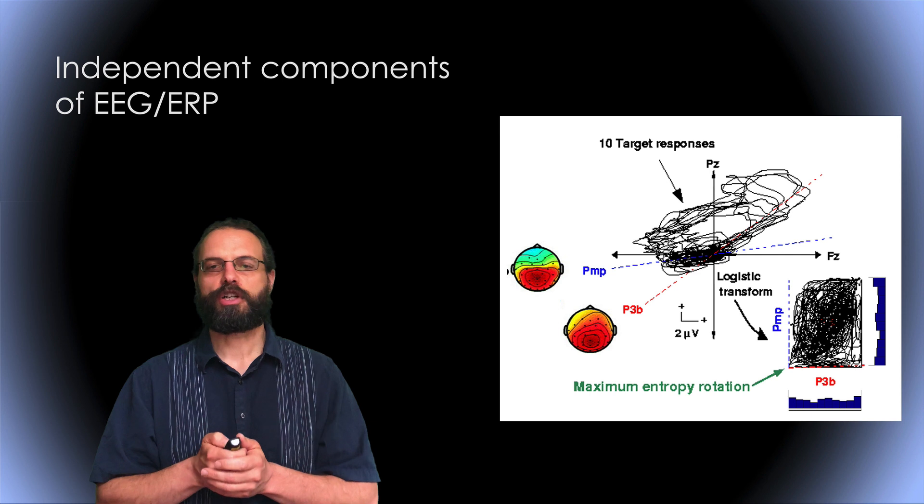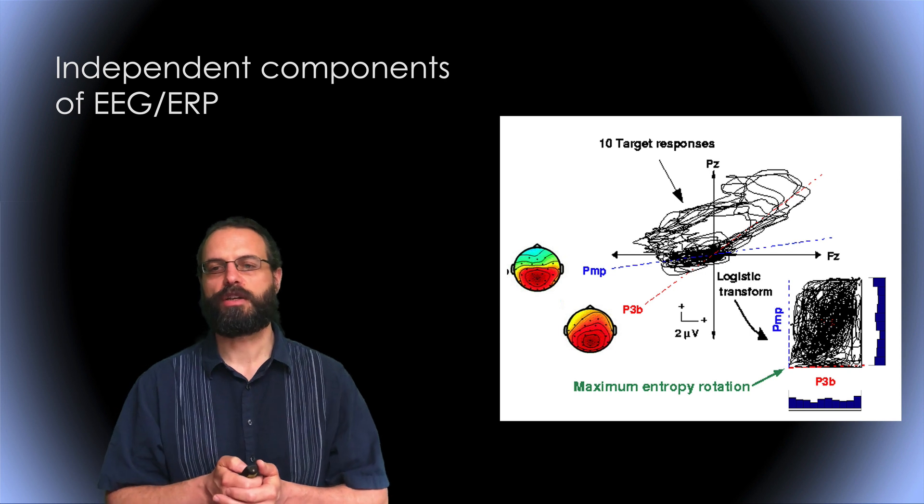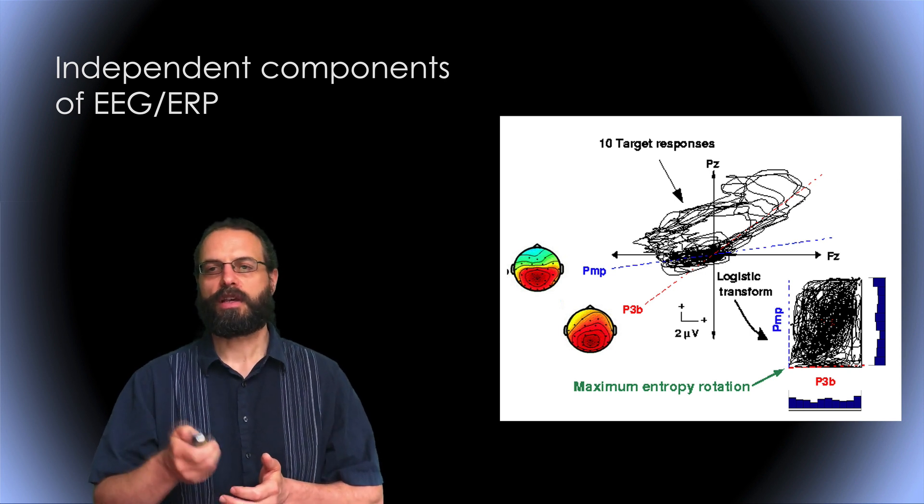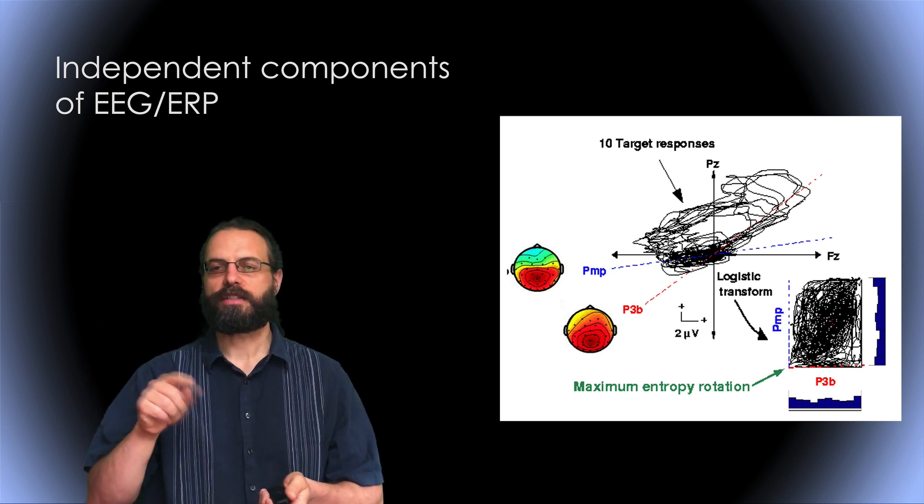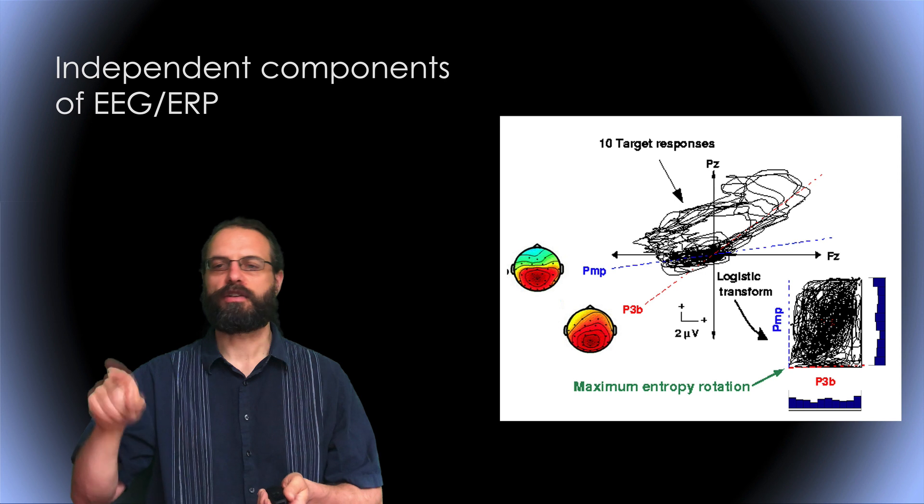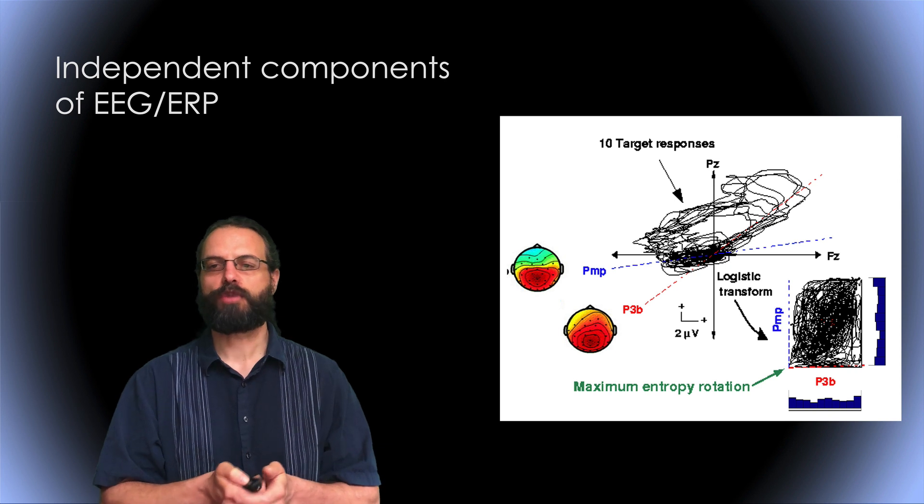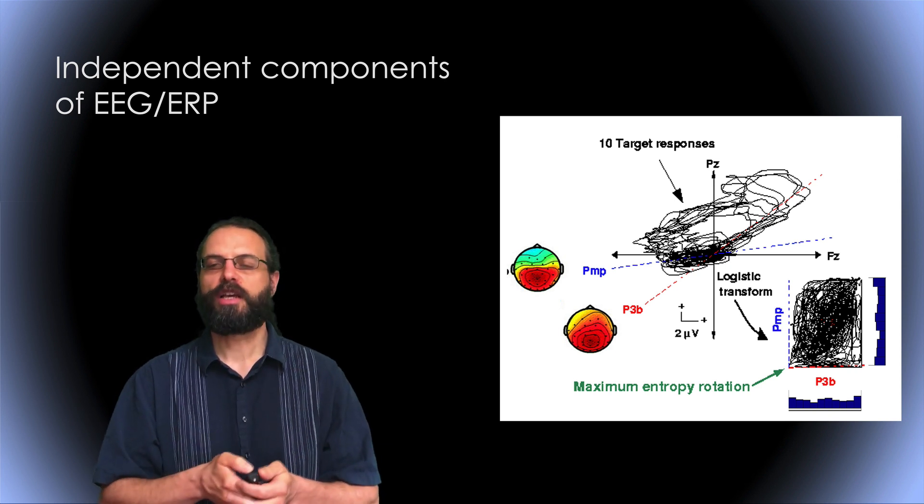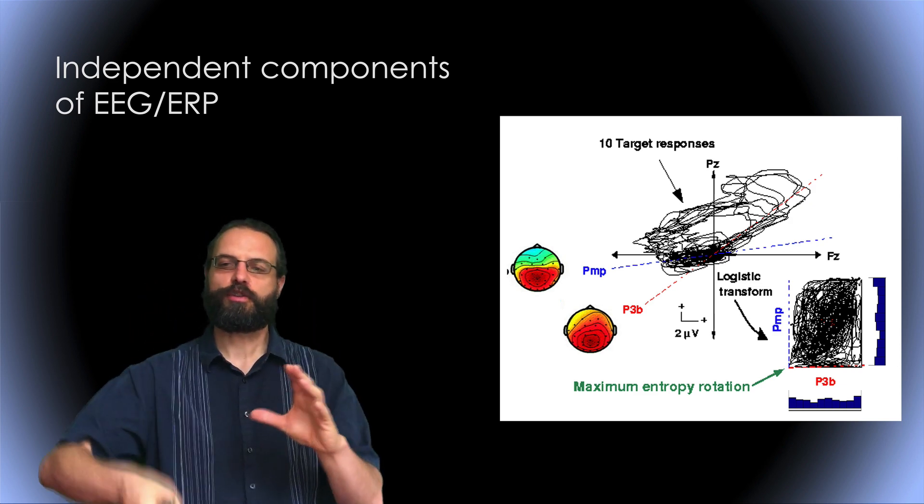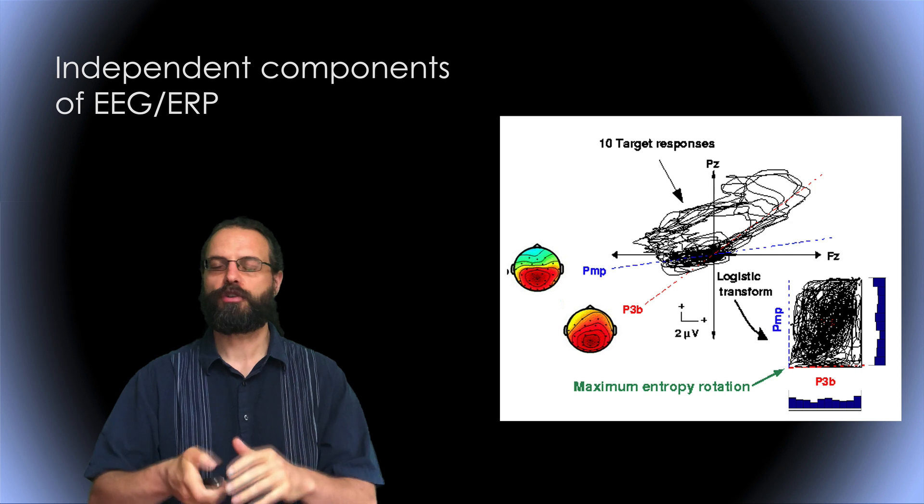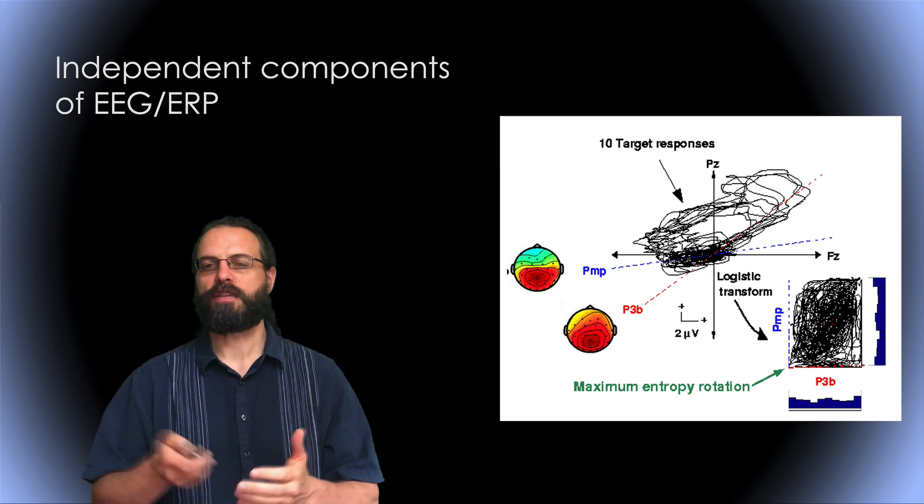So how does that work on real data? This is actual data here, and you can see two electrodes, Pz and Fz. The little wiggly line is time point, so that's the EEG signal through time. Here you see it's called logistic transform. When we apply the logistic transform, we can see that now it fills most of the square, most of the surface, so we can calculate the entropy and we have a relatively uniform distribution.